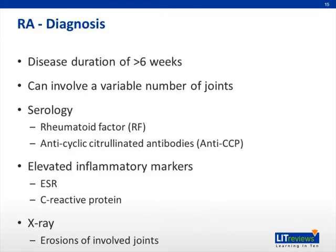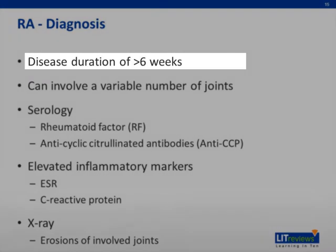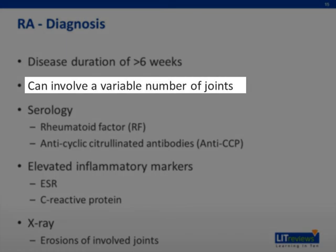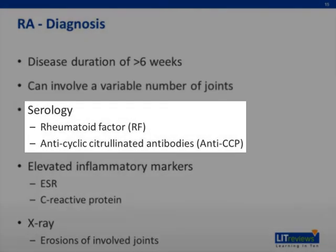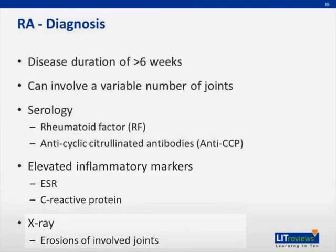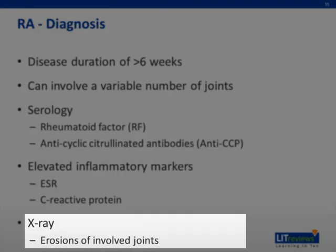The diagnostic criteria for RA include clinical as well as serologic and radiologic factors. Disease in general has to be present for over six weeks and can involve a variable number of joints, but usually smaller joints are involved in a symmetric pattern. Positive serology with rheumatoid factor or anti-CCP antibodies can help confirm the diagnosis, as can elevated inflammatory markers such as ESR or CRP. X-rays demonstrating marginal erosions of the joints can also help confirm the diagnosis.